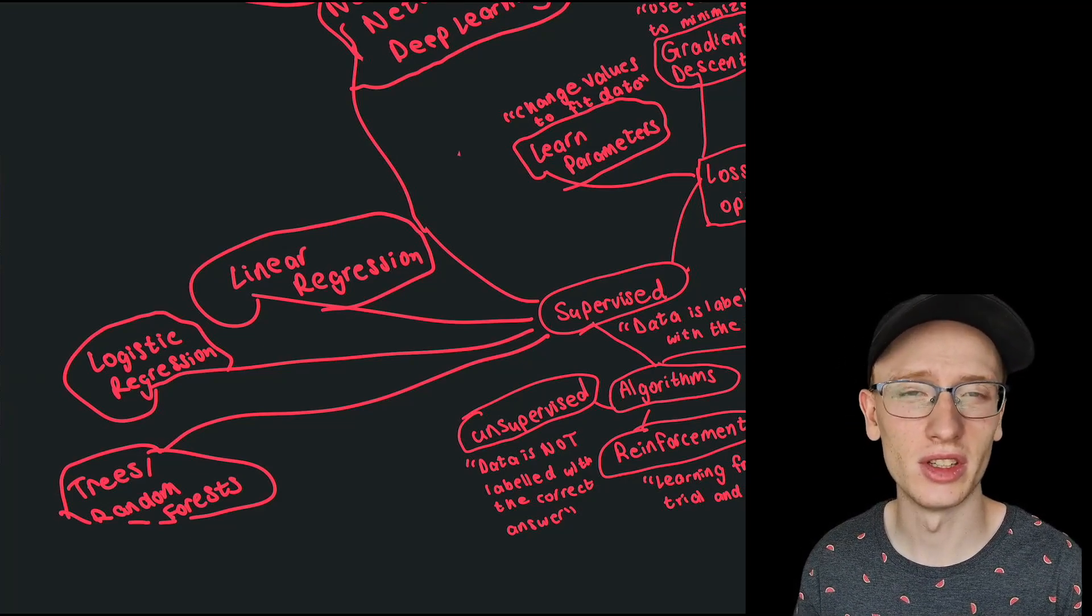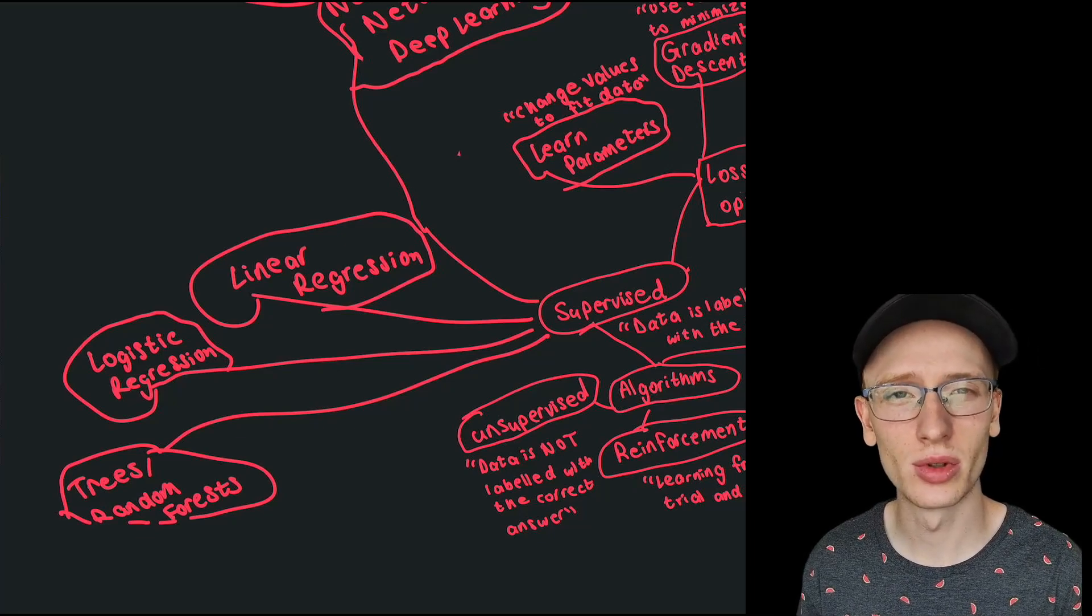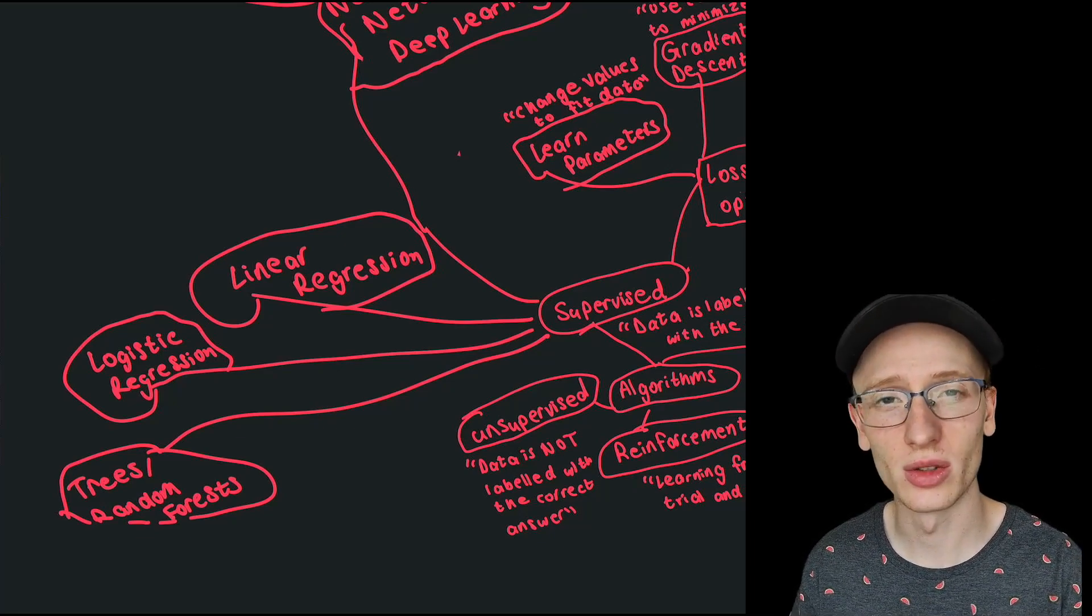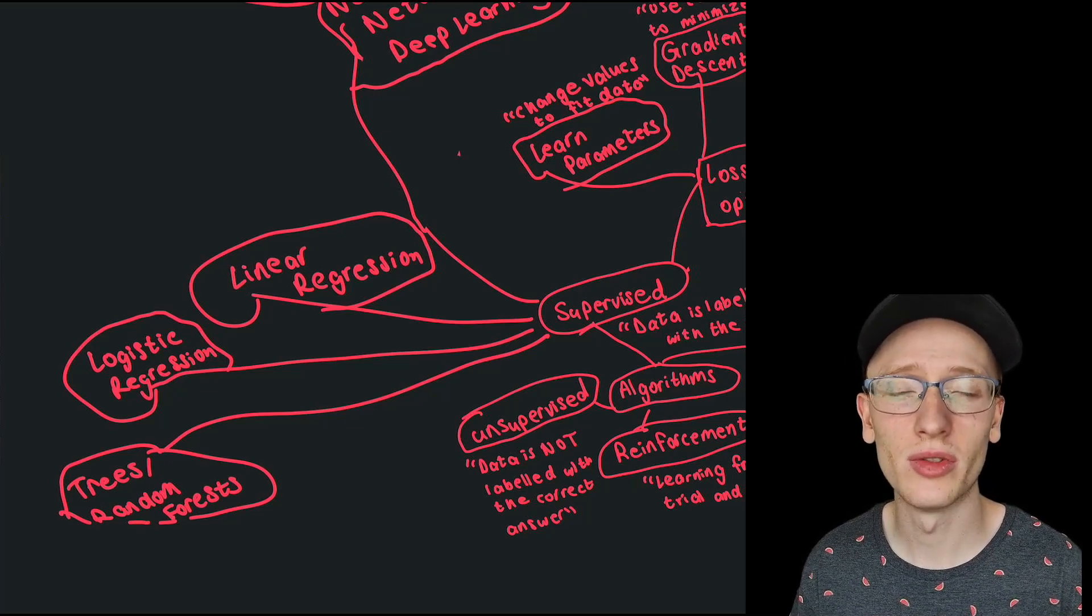Linear regression is for predicting continuous values with a line. Logistic regression is for predicting whether something belongs to a class or not, so whether it is or is not something. Tree methods can do a lot of different things.